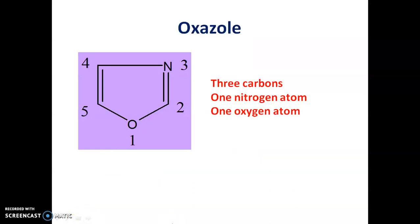This is the structure of Oxazole. It is a five-membered heterocycle which contains oxygen at first position and nitrogen at third position. The numbering starts from the oxygen atom. Oxygen gets number 1, this carbon gets number 2, nitrogen gets number 3, then 4 and 5. In this way, the Oxazole ring is numbered.